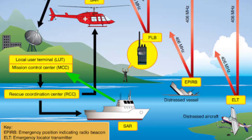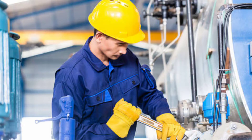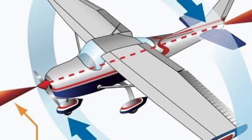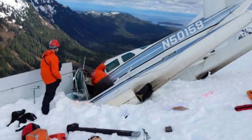An important question for maintenance engineers is: within how much time must an ELT be inspected? The ELT must be inspected within 12 months. The ELT is located at the aft position of the aircraft, just forward of the empennage, and its built-in g-force sensor is aligned with the longitudinal axis of the aircraft. After a crash, it will be activated.